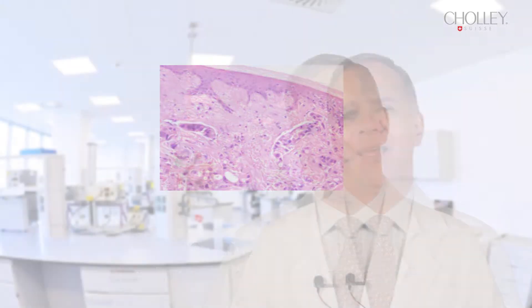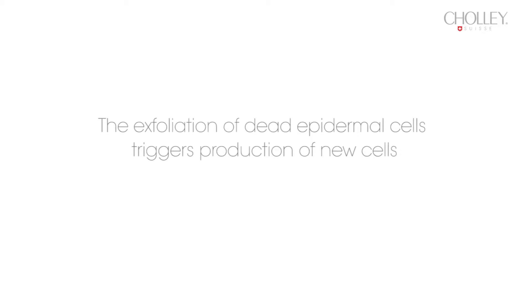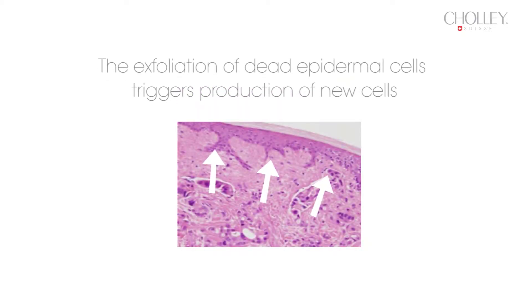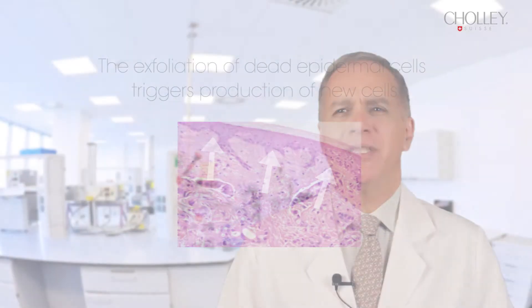As an example, exfoliation of dead epidermal cells triggers production of new cells at the basal or germinative layer of the skin. IC RAM stands for Intercellular Regenerative Relay Resonance and Amplification. It takes advantage of the same mechanism that skin uses to heal itself after a cut or an abrasion.